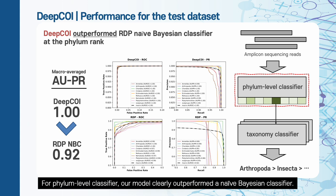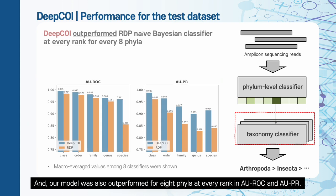For phylum-level classifier, our model clearly outperformed a naive Bayesian classifier. And our model was also outperformed for 8 phyla at every rank in AUROC and AUPR.